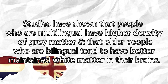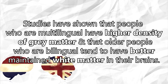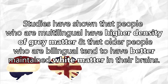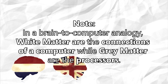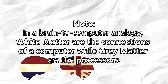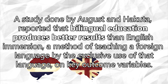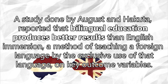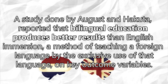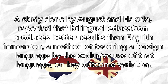Studies have shown that people who are multilingual have higher density of gray matter, and that older people who are bilingual tend to have better maintained white matter in their brain. In a brain-to-computer analogy, white matter are the connections of a computer while gray matter are the processes. A study done by August and Acosta reported that bilingual education produces better results than English immersion — a method of teaching a foreign language by the exclusive use of that language — on key outcome variables.